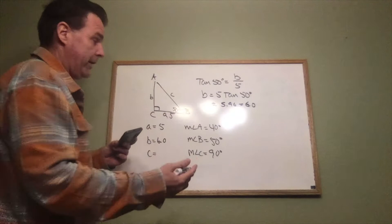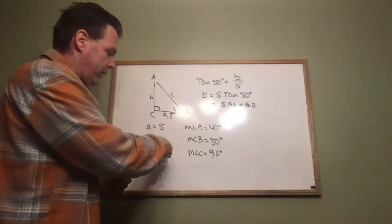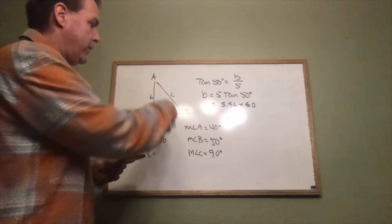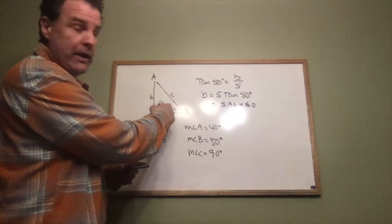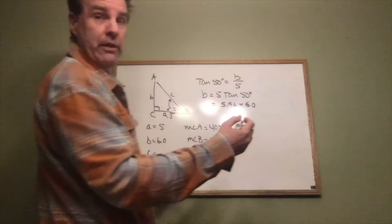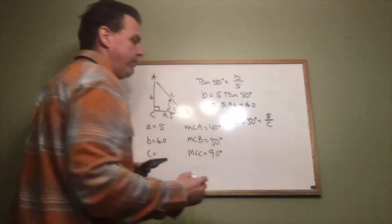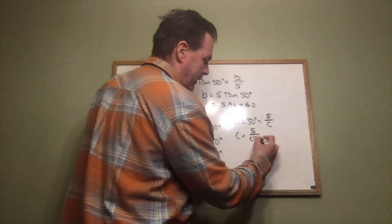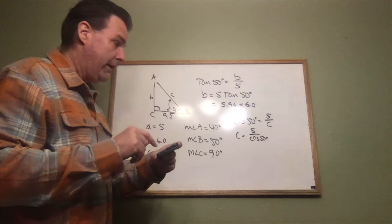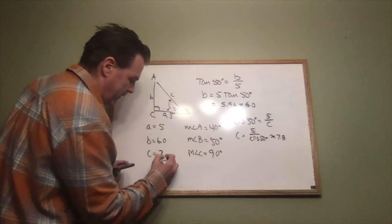Now I need to solve for side c. Even though it's a right triangle, I don't want to use the Pythagorean theorem here because b is a rounded value and we'd lose accuracy. Instead, going back to the original values — side a equals 5 and angle B equals 50 degrees — side c is the hypotenuse and a is the adjacent side, so we use cosine: cosine of 50 degrees equals adjacent over hypotenuse, giving us c equals 5 over cosine of 50 degrees, which comes out to approximately 7.8. We've now solved the right triangle with all missing pieces found.